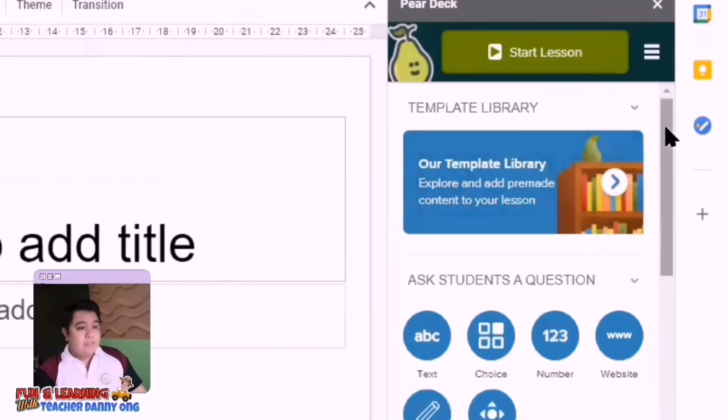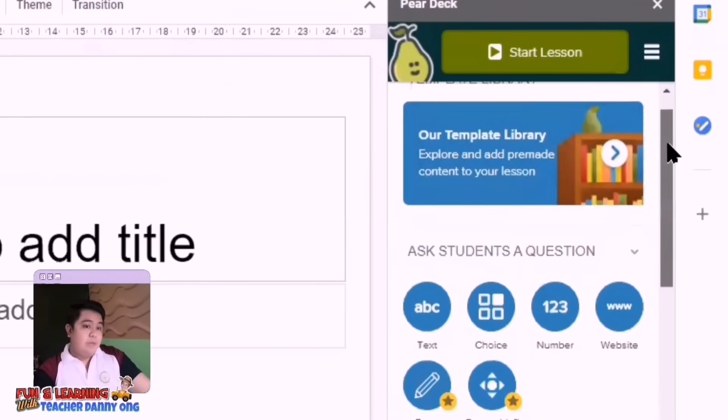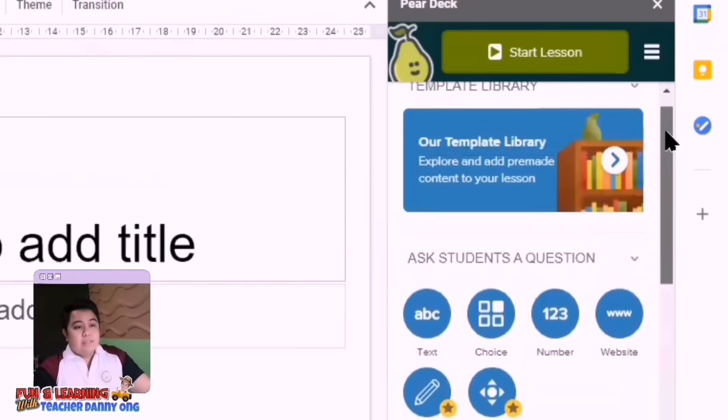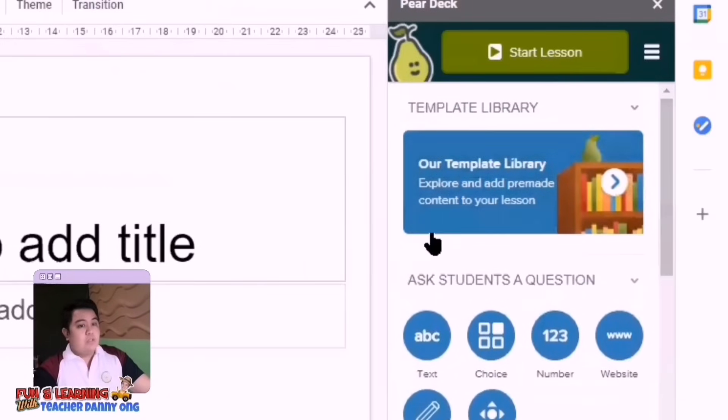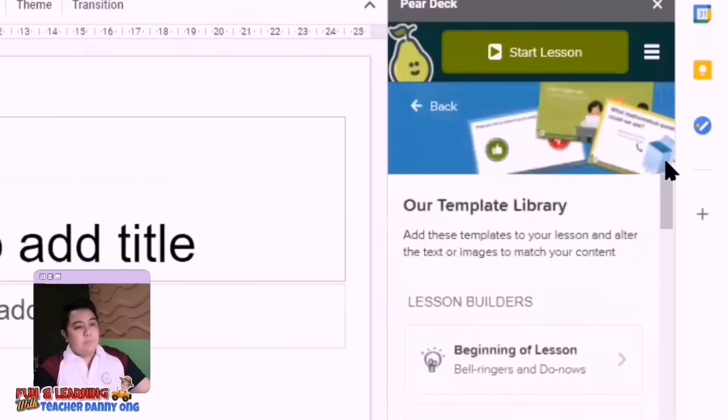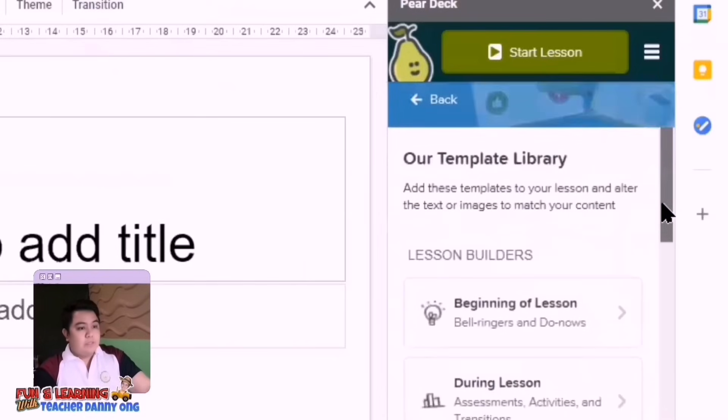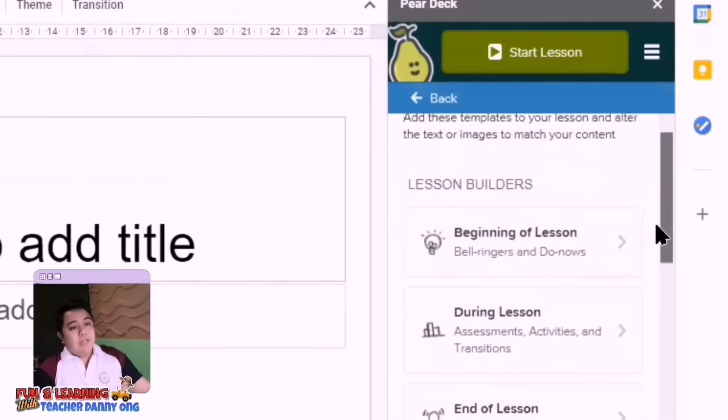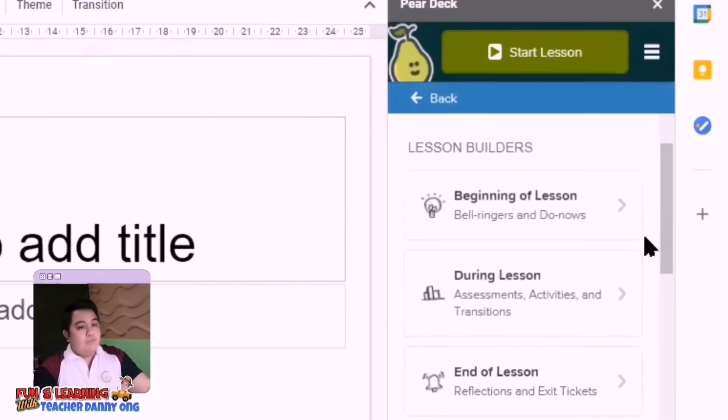Now on the right side of your screen, you can see the PeerDeck library. You can add pre-made slide templates or customize your interactive slides. So simply scroll through the PeerDeck sidebar to find these options. Now we have here lesson builders for beginning of your lesson, during the lesson, and at the end of the lesson. These are quite helpful.